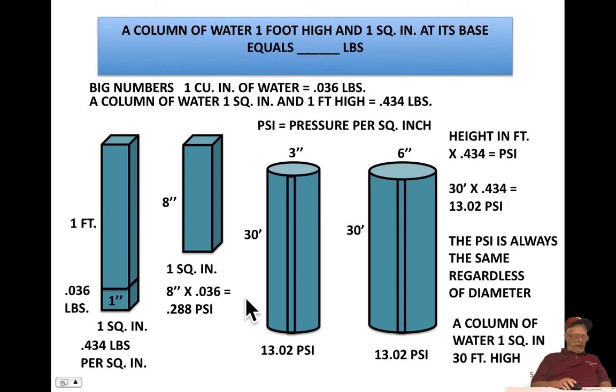The normal problem you'll have when you get into your test, or even when you're learning, a 3 inch pipe or stack 30 feet high would exert a pressure per square inch of how much? In order to do that, all we have to do is multiply height in feet times .434. 30 inches times .434 is 13.02 pounds per square inch. So, you have a 3 inch pipe full of water, 30 feet high. The pressure per square inch is 13.02 pounds per square inch.